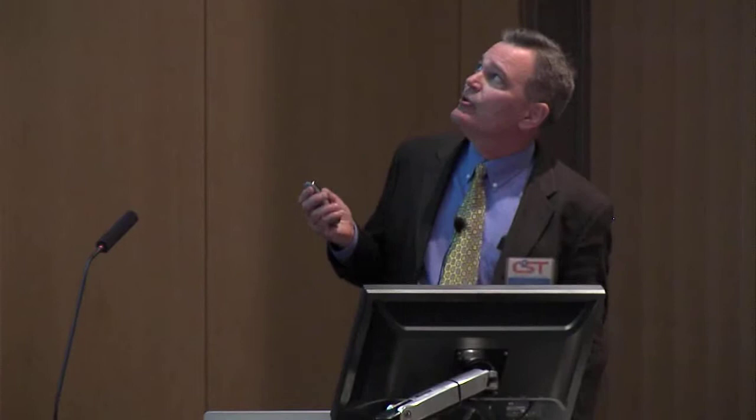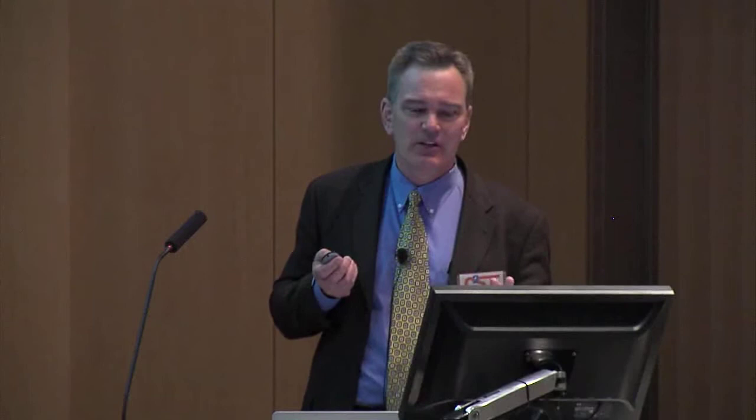Going back to World War II and the Manhattan Project, they used adding machines — they didn't have digital computers, so world-famous scientists were cranking away doing bomb calculations. Shortly thereafter, digital computers came along, and Anis Rahman picked up on that in the early 60s. They discovered you could take those computers and solve very hard equations — equations that Isaac Newton or Schrödinger wrote down — that you can solve in certain limiting cases, but often we just stare at these equations and don't know what to do with them.